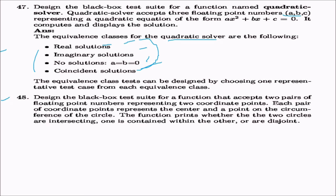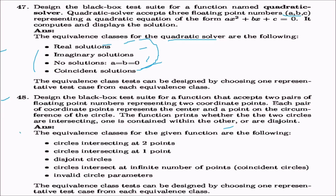Design a black box test suite for a function accepting two pairs of coordinates (center and circumference point) defining two circles, which prints whether the circles are intersecting, contained within each other, or disjoint. Equivalence classes: circles intersecting at two points, circles intersecting at one point, disjoint circles, circles intersecting at infinite points (coincident), and invalid circle parameters.